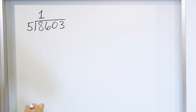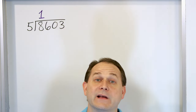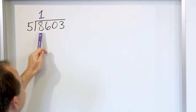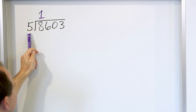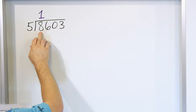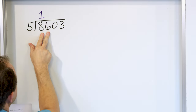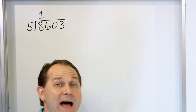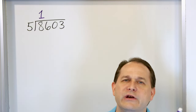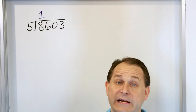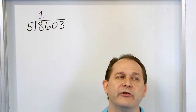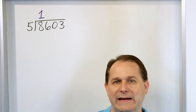Notice right there, that's a difference from the last lesson. In the last lesson, the first number here was always chosen to be less than what's on the outside, so we had to consider the first two digits. That was only because the first digit was so small we couldn't divide into it. But here, the first number will be large enough so that we can divide into it.